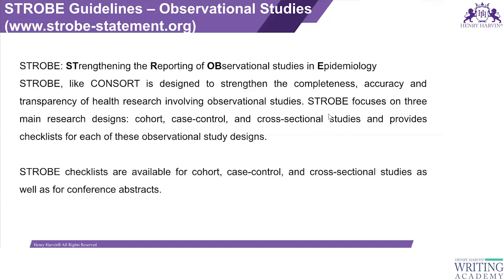STROBE focuses on three main research designs: cohort, case-control, and cross-sectional studies, and provides a checklist for each of these observational study designs. There is a separate checklist for each design, and also a combined checklist is available. In this class, we'll discuss the combined checklist.